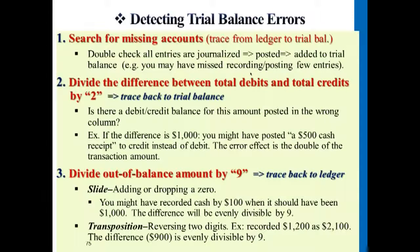After you divide by nine you get $100, which would correspond to the transaction amount. This evenly divisible-by-nine result could mean an additional zero, a missing zero, or switched digits. For example, if you recorded $1,200 of cash but mistakenly recorded it as $2,100, the difference of $900 is also evenly divisible by nine. So if the trial balance ending difference is evenly divisible by nine, it could be either one of these errors — but these are harder to trace compared to posting to the wrong side.